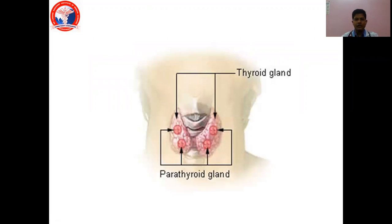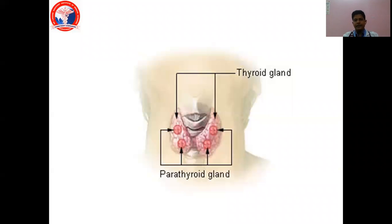The parathyroid glands, as you know, are four glands located at the back of the thyroid gland in the neck. We have two sets of them: the superior left and right parathyroid gland, and the inferior left and right parathyroid gland.